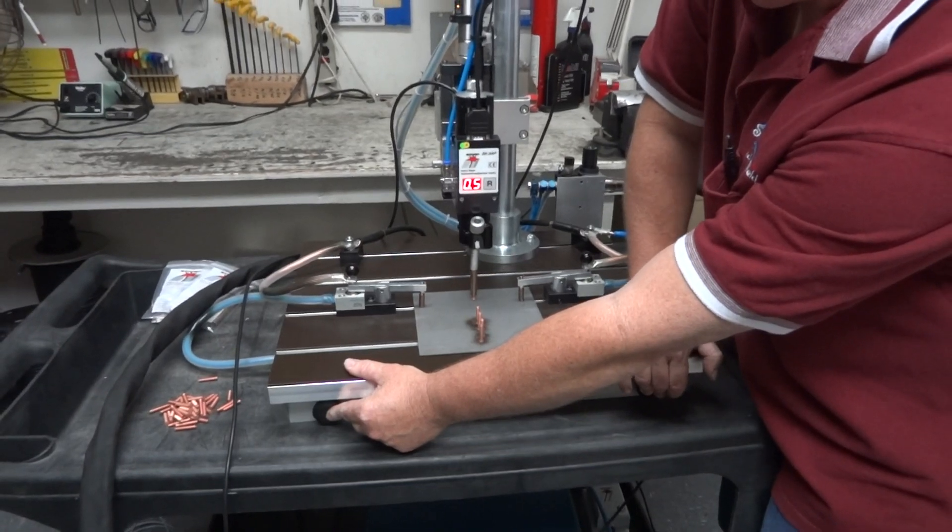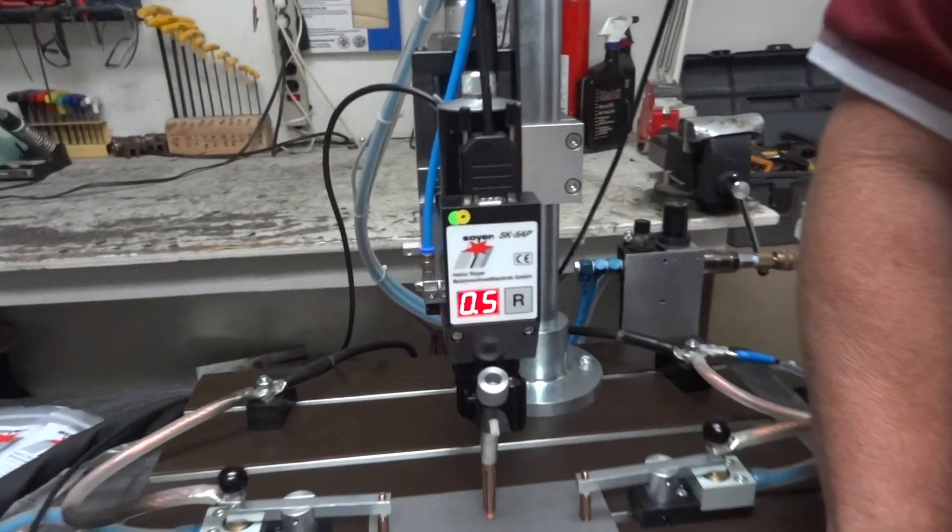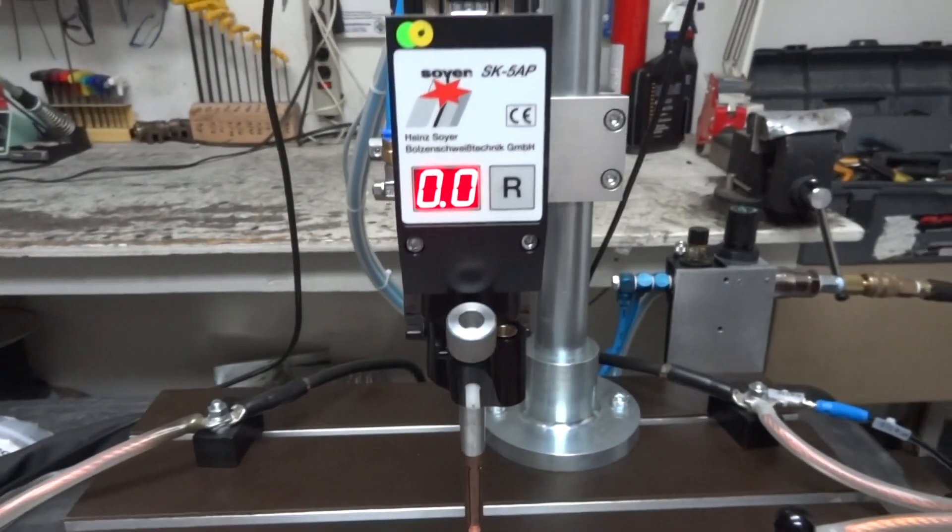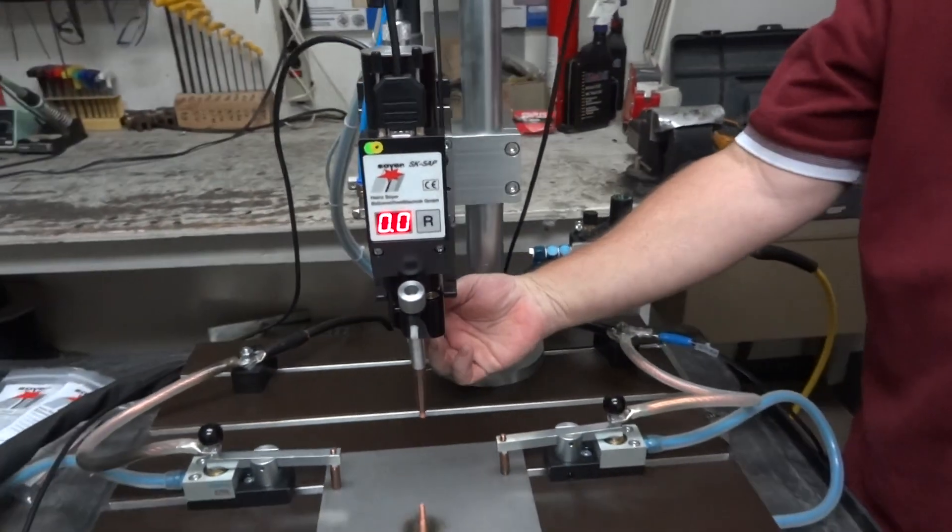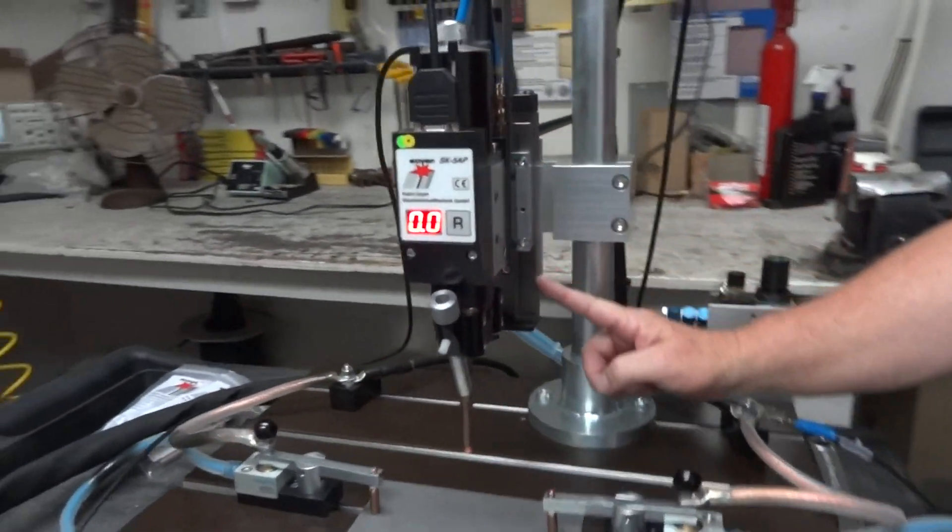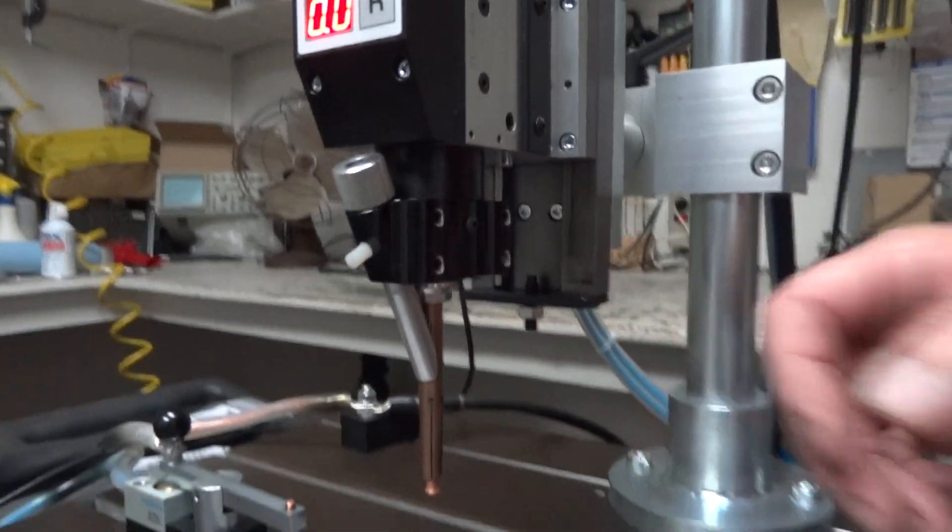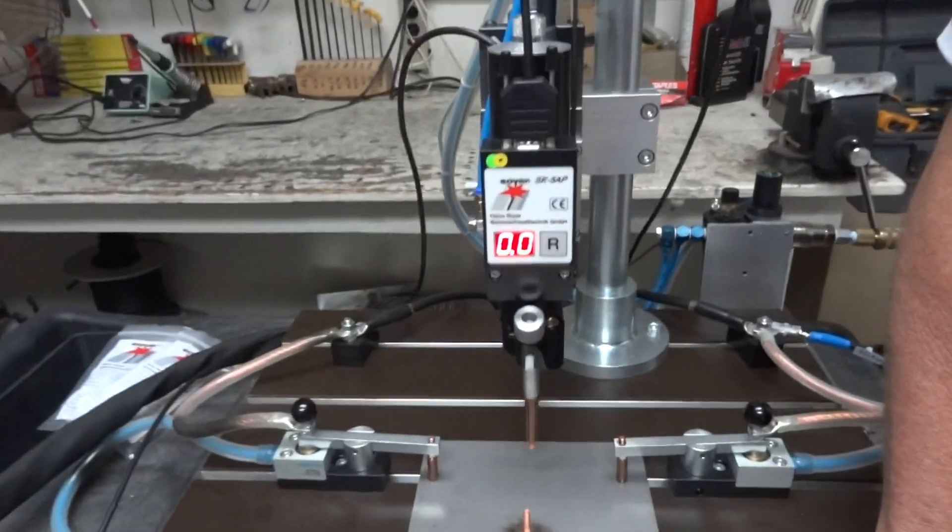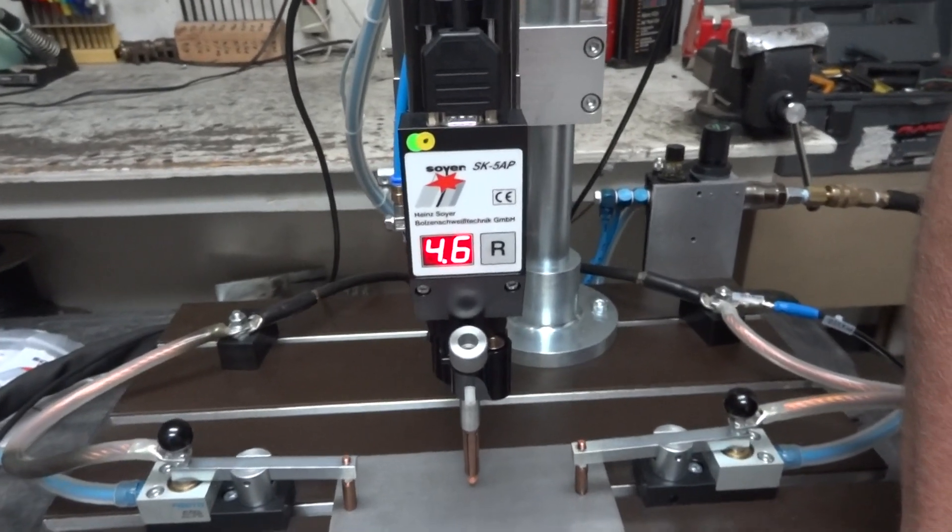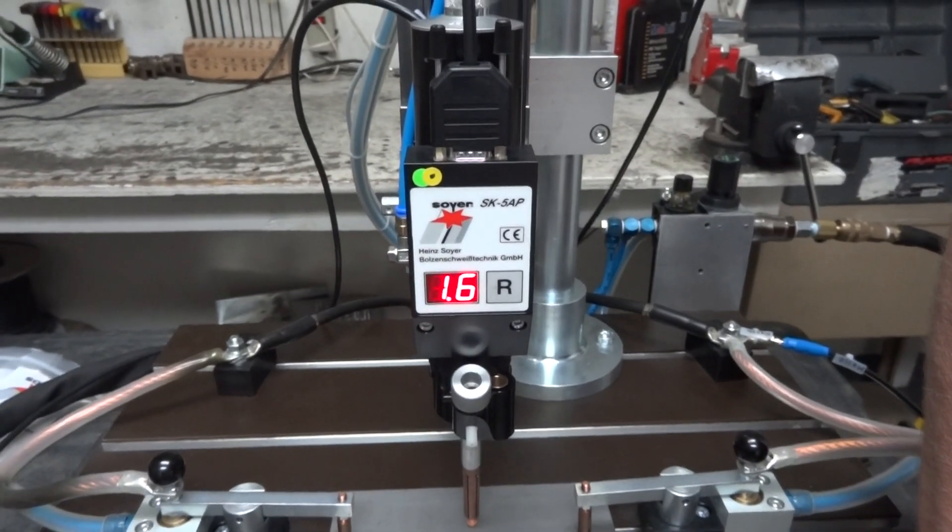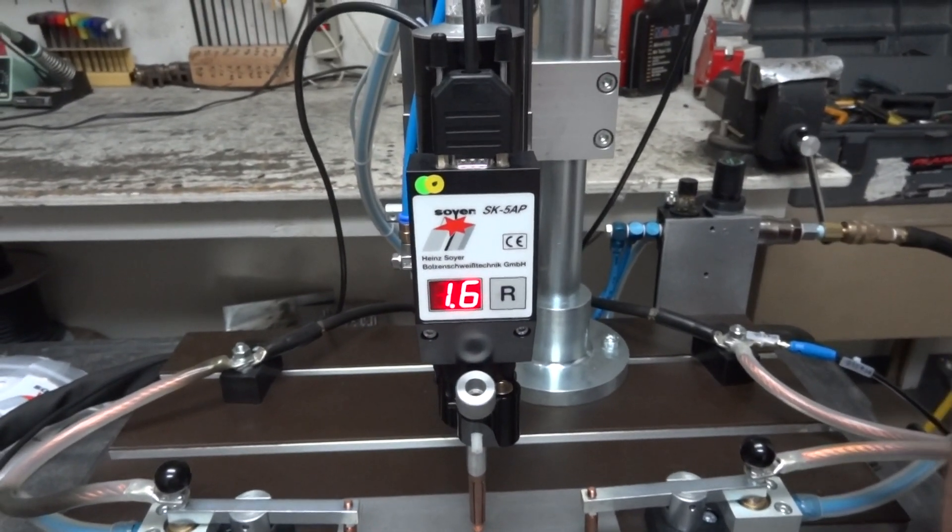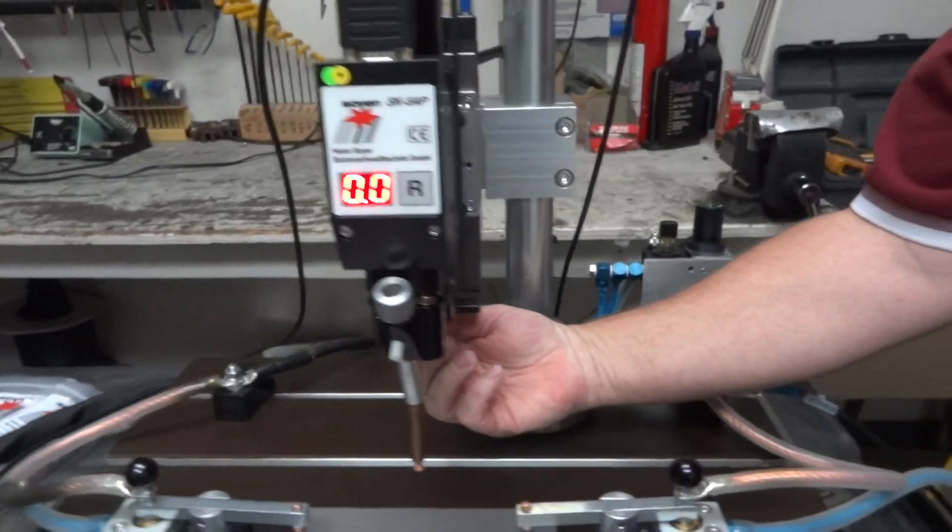We adjust this by this little set screw here at the bottom of this pneumatic slide. I'm going to move that down a little bit. Let's check it now. Now the immersion is 1.6, just a little bit more.